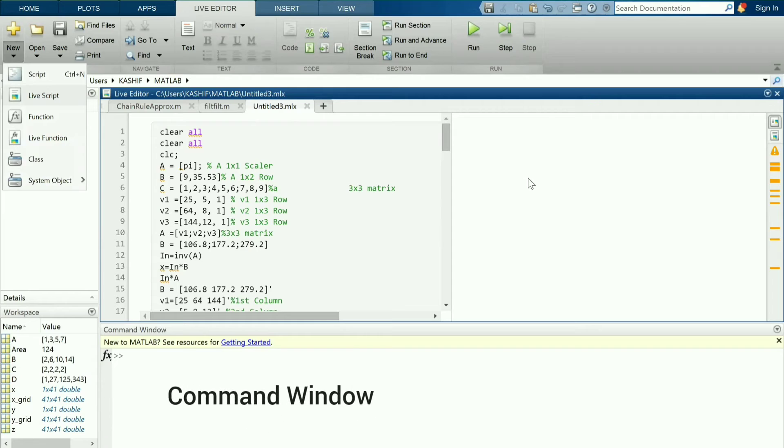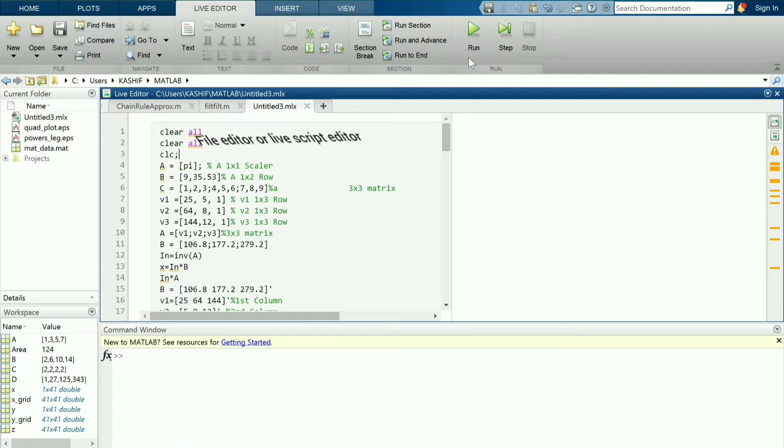In the bottom, we have the command window where we can define variables or call the built-in or user-defined functions. Above this, we have the file or live script editing window. On its right, the output of live script can be seen. For other M files, the output can be seen in command window.